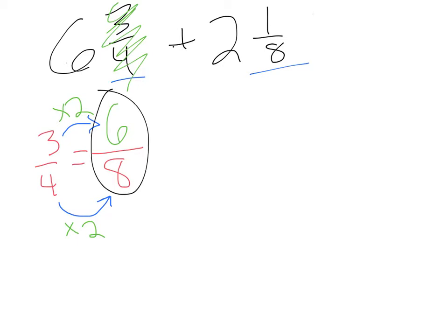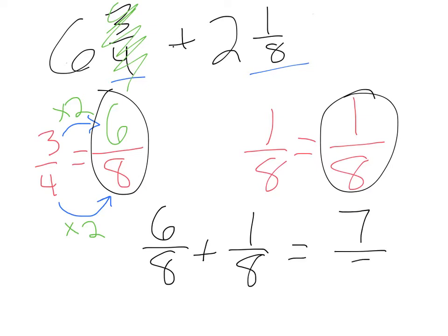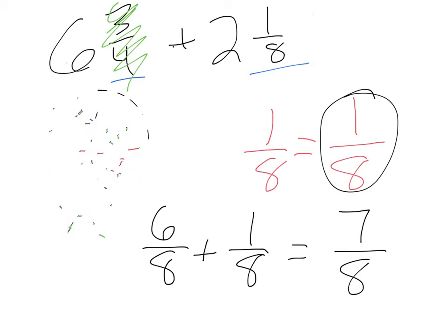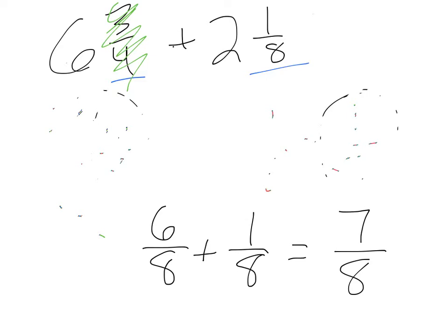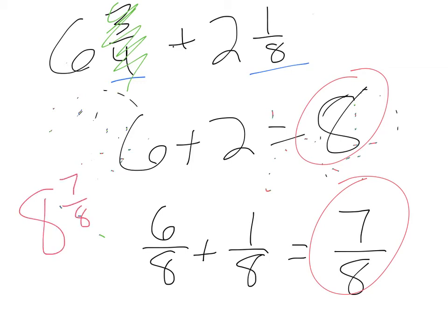1 eighth already has the common denominator of 8, so there's nothing to change — we just used times 1, so 1 times 1 is 1, giving us 1 eighth. Adding our two new fractions: 6 eighths plus 1 eighth. 6 plus 1 is 7, and 8 stays our denominator — so there's our fraction answer: 7 eighths. Now we go back and add those whole numbers: 6 plus 2 gives us 8. So the total answer is 8 and 7 eighths.